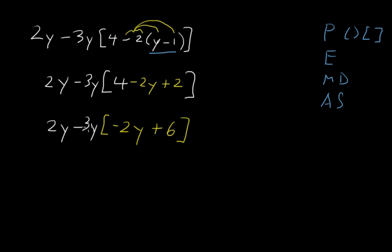Now note that the negative 3y is being multiplied by everything inside the brackets. We can't simplify what's inside these brackets anymore, so we'll start multiplying. We have no exponents, so we'll start multiplying. I'm going to change colors now and multiply negative 3y times negative 2y and negative 3y times 6.